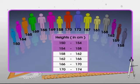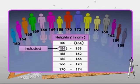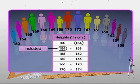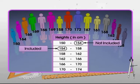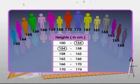If it's considered in both the classes, then it's counted twice. To avoid such a repetition, we consider 154 in the interval 154 to 158, and it's not included in the interval 150 to 154.